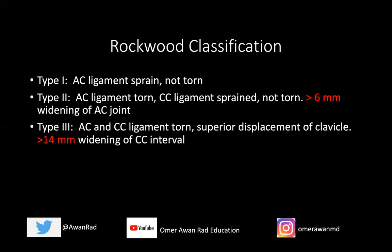A type three, like the case I showed you, is when both the AC and CC ligaments are torn, with superior displacement of the clavicle. The AC interval is typically more than six millimeters and the CC interval — between the coracoid process and the clavicle — is more than 14 millimeters. Most commonly on radiography, you're going to see type two and type three injuries.